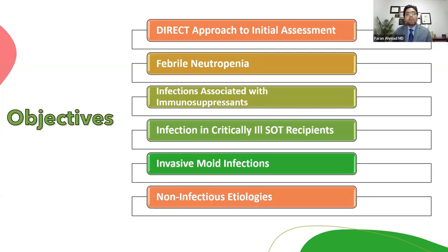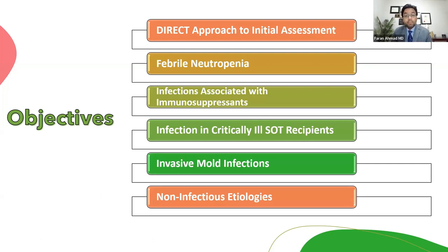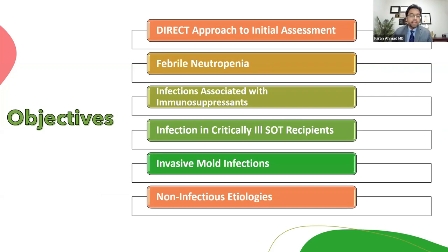Today I'm going to design my talk around key objectives, particularly focusing on critically ill patients. I'll talk about a direct approach to the initial assessment of these patients, briefly discuss febrile neutropenia and infections associated with immunosuppressants, then infections in solid organ transplant patients with focus on invasive mold disease and invasive mold infections, and finally certain non-infectious etiologies that may look like infection but are not.